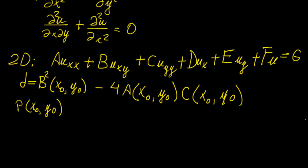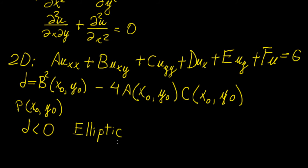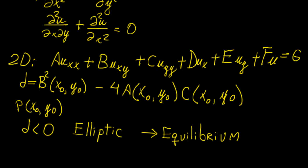Depending on the value of the discriminant, we assign a different type of differential equation. The first case is when the discriminant is less than zero — we call this PDE elliptic. This usually relates to equilibrium problems, such as solid mechanics.